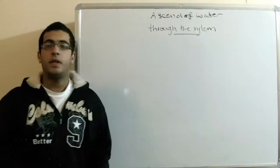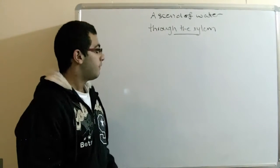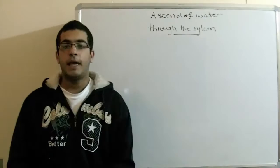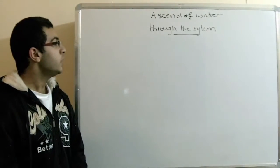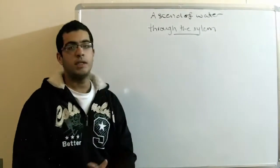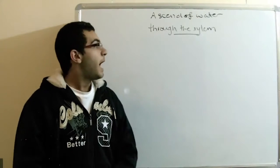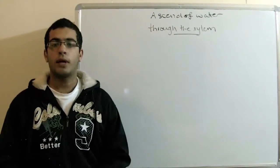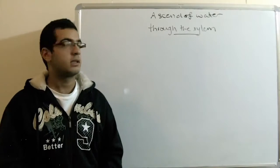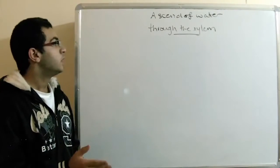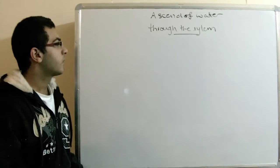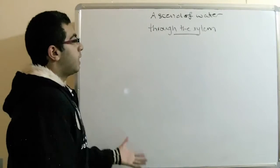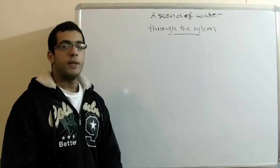In the previous video, we already knew the structure of the root and stem of the plant, and we knew that the xylem is found in the vascular bundle of the plant. The function of xylem is to translocate the water and mineral salts from the root system to the leaves, buds, and other parts of the plant. So we'll draw a diagram to show this path.